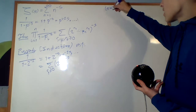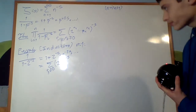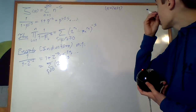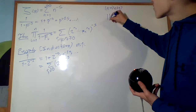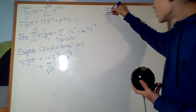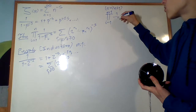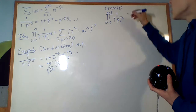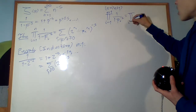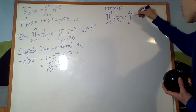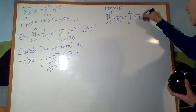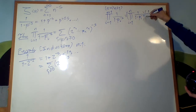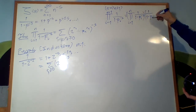For the inductive step — n implies n plus 1 — we assume it's true for some n and prove it for n plus 1. We have the product from i equals 1 to n plus 1 of 1 over 1 minus pi to the negative s. This is equal to the product from i equals 1 to n of 1 over 1 minus pi to the negative s, multiplied by 1 over 1 minus p sub n plus 1 to the negative s.